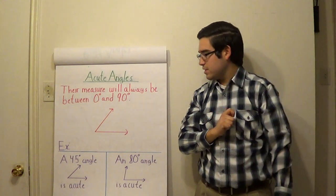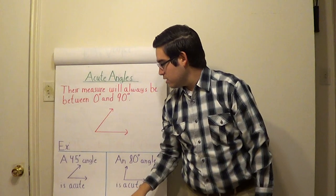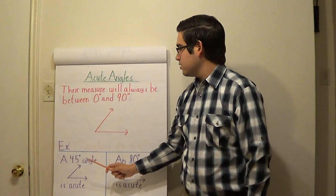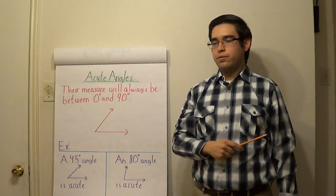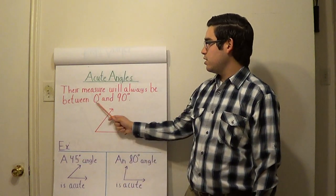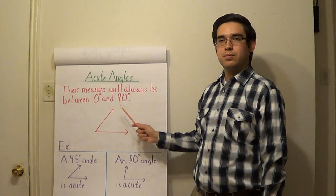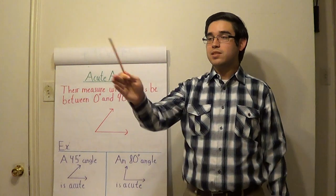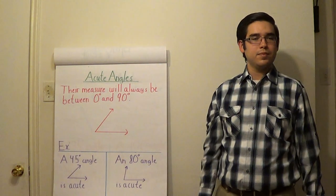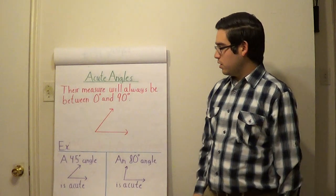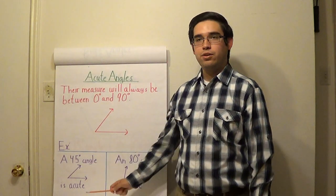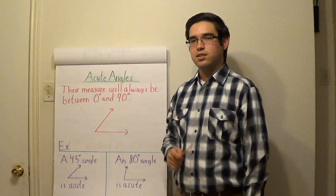Let's consider some examples. Let's consider 45 degrees. Is 45 between 0 and 90? Yes it is, so what does that mean? It means that our 45 degree angle is acute.